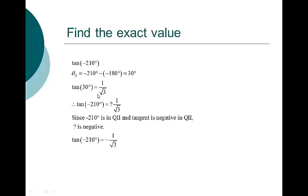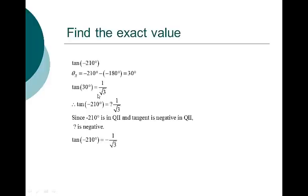Tangent of negative 210 degrees. I'll keep the angle as negative 210. Negative 210 has a reference angle of 30 degrees — 210 minus 180 is 30. The tangent of 30 degrees is 1 over the square root of 3. Therefore the tangent of negative 210 is also 1 over the square root of 3. Since negative 210 is in quadrant 2 and tangent is negative in quadrant 2, the answer is negative 1 over the square root of 3.